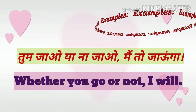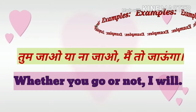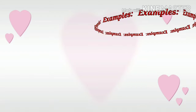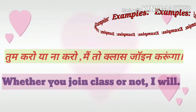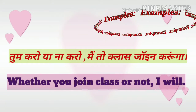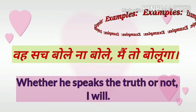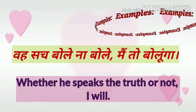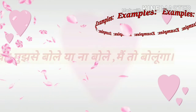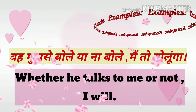When you have to write one verb two times, you will avoid it. So we are not writing it twice: 'You do or not, I will.' Whether he joins the class or not, I will. Whether he speaks the truth or not, I will.